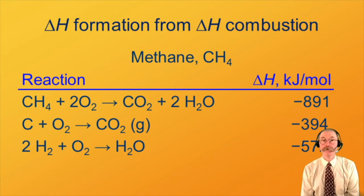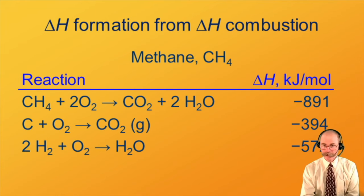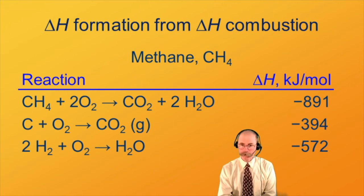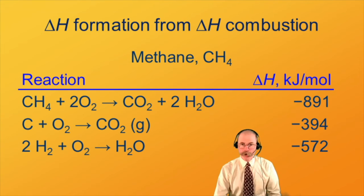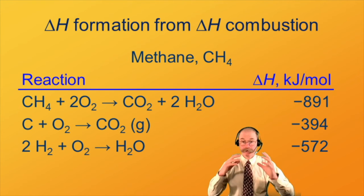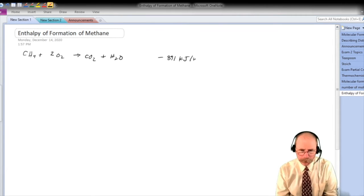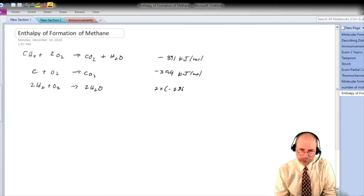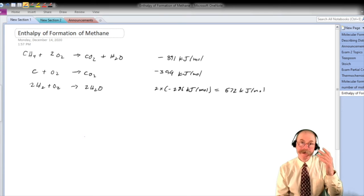Now I'd like to give you an example of how we can use enthalpies of combustion to find enthalpies of formation. In this particular case, we'll find the enthalpy of formation of methane, CH₄. So here we have the enthalpies of combustion of three substances: methane, carbon, and hydrogen. Here in the case of hydrogen, I've listed the heat of combustion of two moles of hydrogen because we're going to need two moles here. First, I'm going to write down the data that we had from the slide so that it's in front of us.